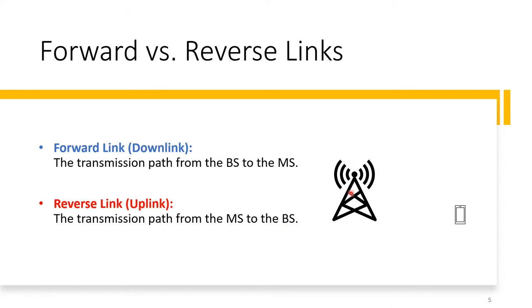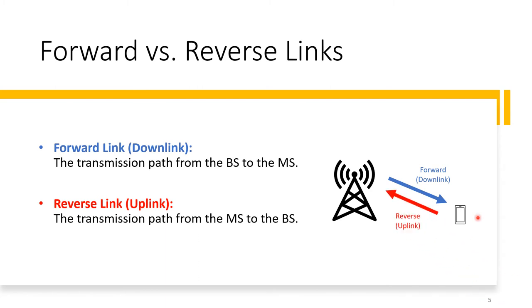To get used to the terminology: the base station is usually higher than the mobile station. The transmission path from the base station to the mobile station is called the forward link or downlink. The other direction is called the reverse link or uplink. Think of a person with a mobile station walking and looking up at the tower — downlink comes down, and you look up for the reverse link.